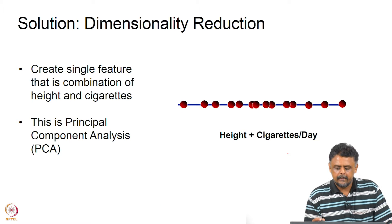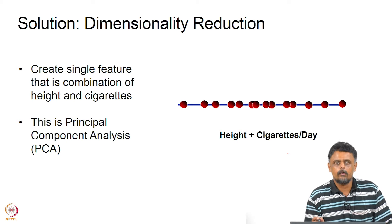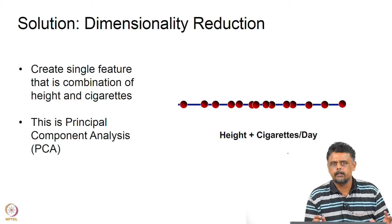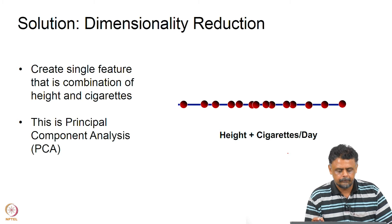So finally, we created a single feature which is a combination of height and cigarettes, and this process of reducing the dimensionality of the data is what we call Principal Component Analysis.